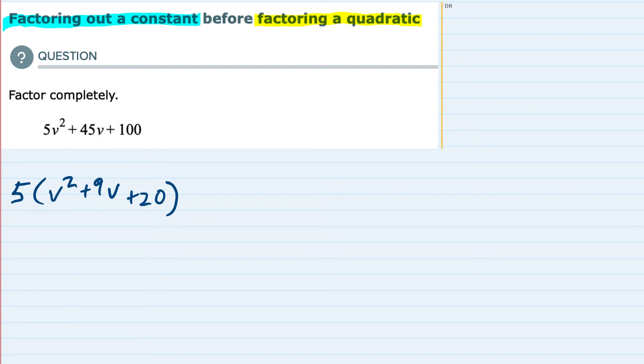So now I'm going to move to the second part, which is to factor the quadratic. So now we have to factor this quadratic that resulted once we factored out the constant. And since this has a leading coefficient of 1, it's not going to be too bad to factor.